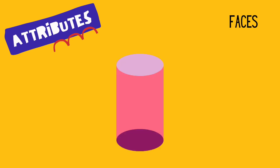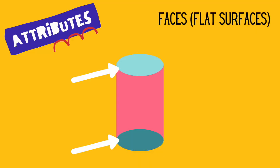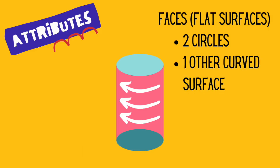In order to identify cylinders, you must be able to describe their attributes. Let's start by talking about faces. Remember, a face is another word for a flat surface, like these two. All cylinders have two faces that both look like circles. Cylinders also have one other curved surface. This is not a face because it is curved.